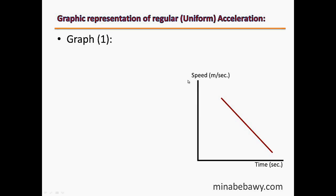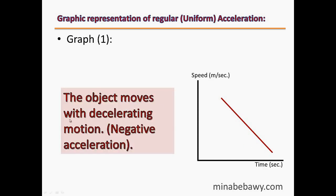Now we will look at the graphic representation of regular or uniform acceleration, and we will study three graphs. The first graph has speed in m/s over the y-axis and time in seconds over the x-axis. As we can see, by increasing the time the speed decreases, which means its initial speed is greater than its final speed — so this object moves with decelerating motion or negative acceleration. This occurs in a car when the driver presses the brake.